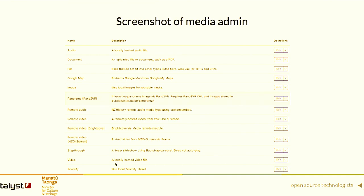We ended up with a fairly extensive set of media types. Out of the box Drupal comes with image, video, audio, remote video, and document for PDF. But we added things like panorama, remote audio, step-through slideshow, and Zoomify, which is tiled image zooming.